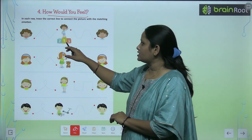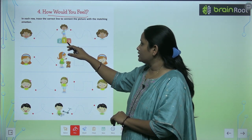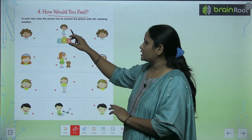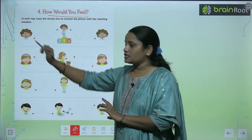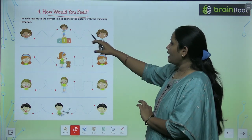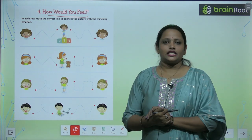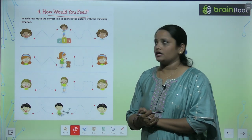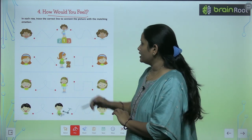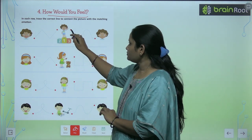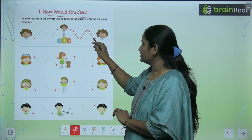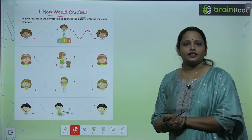Here you can see this boy standing here. You can see his face — he's smiling, like this child is smiling. His face is showing this emotion. So we trace a line like this. Clear?